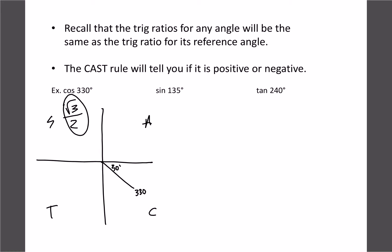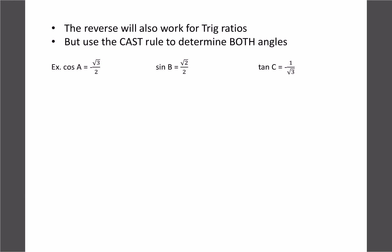For sine of 135, that one's going to be in this quadrant, and our reference angle would be 45, so sine of 45 is 1 over root 2, and in the S quadrant, it's positive, so we're done with that one as well. And our last one, tan of 240, that would give us a reference angle of 60, so tan of 60 is root 3 over 1, or just root 3, and we're in the T quadrant, so it's also positive, so we have no negatives for any of these three.